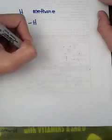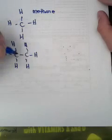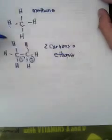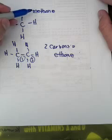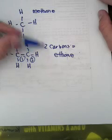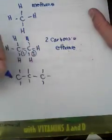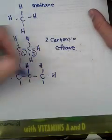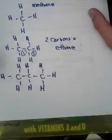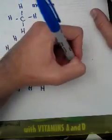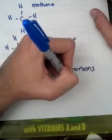So what if we have two carbons? We draw hydrogens all around it. We have two carbons and all the hydrogens — so we know this is an alkane. Before we had one carbon — that was called methane. Now we have two carbons and this is called ethane. And now let's put a third one: three carbons, and that is propane.